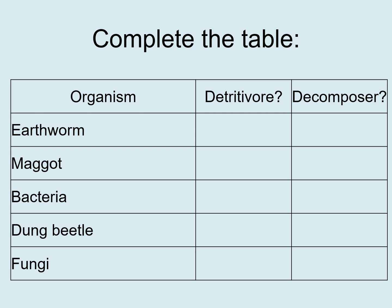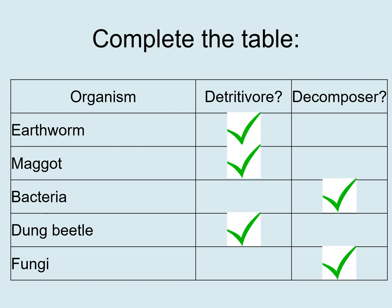I'd like you to copy this table into your books — write down the name of the organism and then tick the correct column. For an earthworm, is it a detritivore or a decomposer? For a maggot, is that a detritivore or a decomposer? Copy the table, fill it in with ticks, then pause the video here. Here are the answers: the earthworm and the maggot are both detritivores. Bacteria are decomposers. The dung beetle is a detritivore. And fungi are also decomposers.